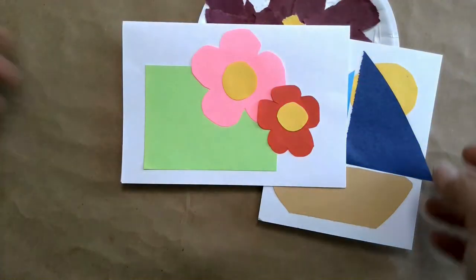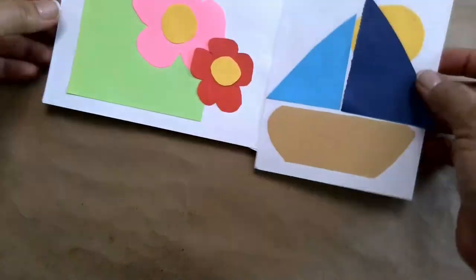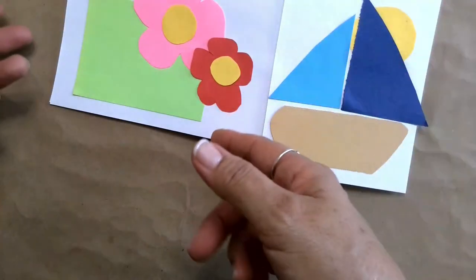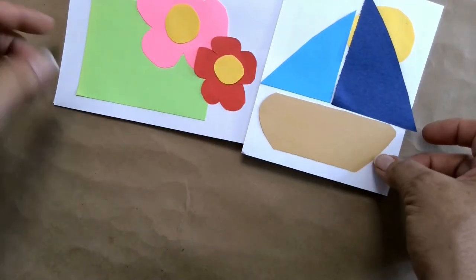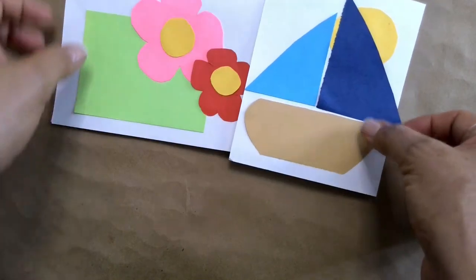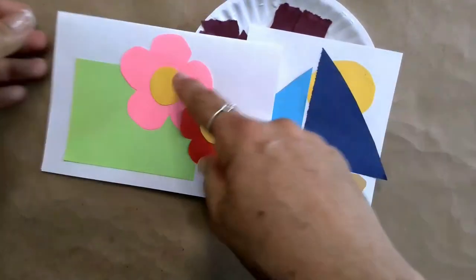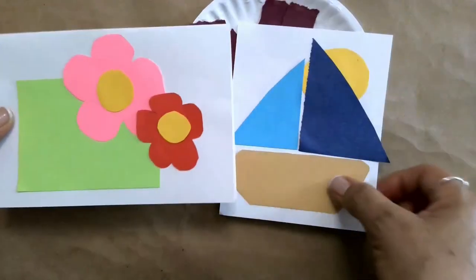And I made some decorations for my care notes using construction paper. Here you have it. Those are the flowers and here I also made a boat.